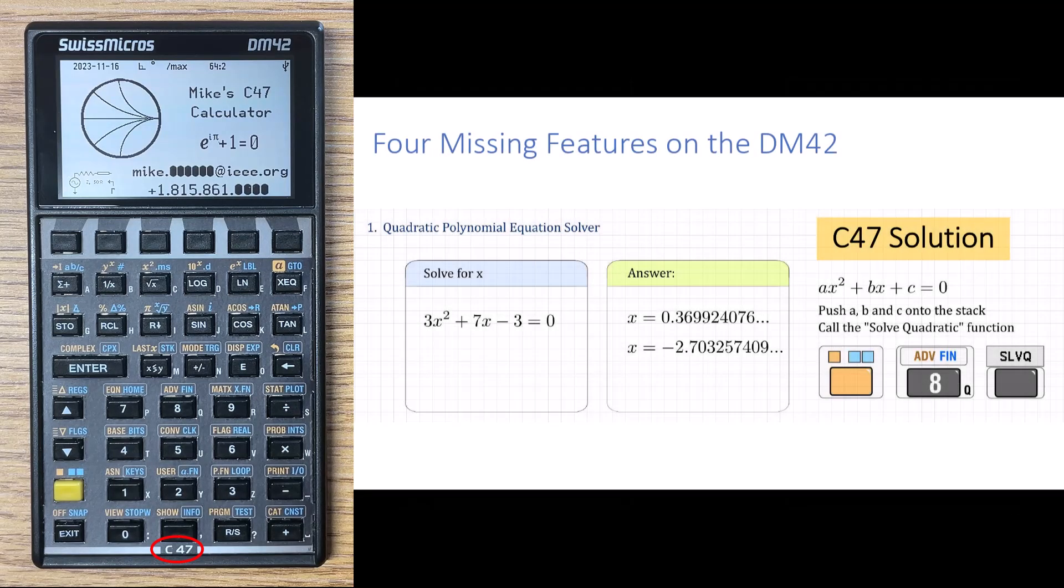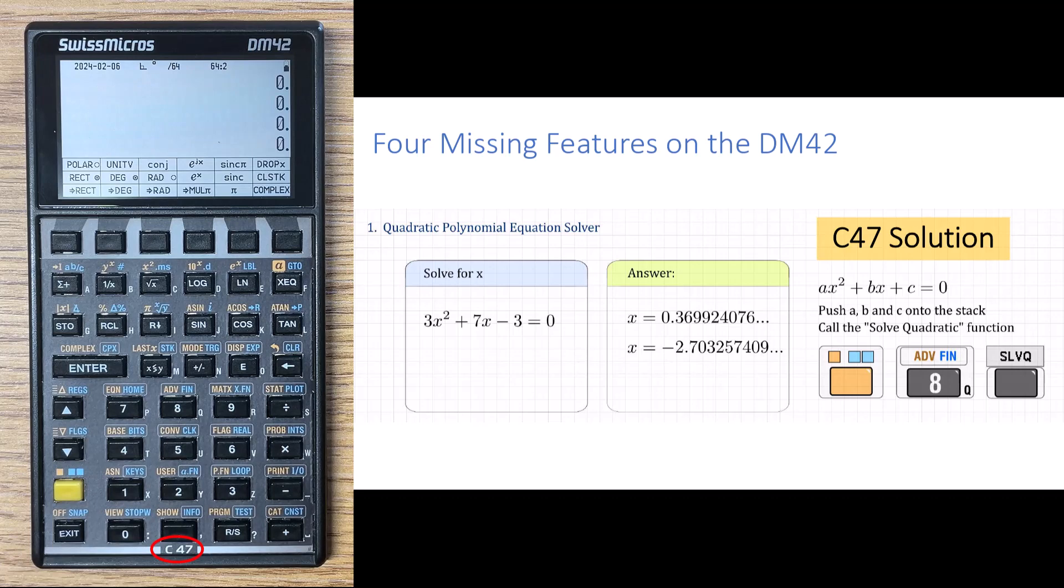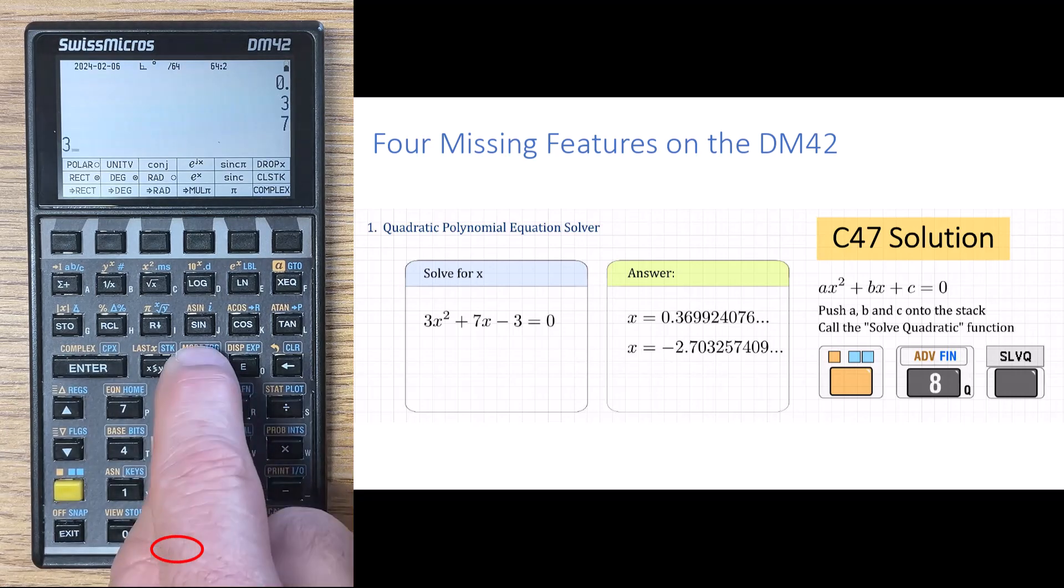So the first shortcoming is that the DM-42 does not offer a quadratic equation solver. Let's see how we solve a quadratic equation on the C-47 calculator. First we just enter the a, b, and c coefficients onto the stack. So for this problem we do 3, enter, 7, enter, 3, negative, enter.